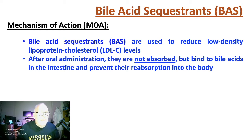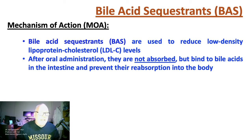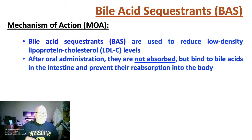With respect to the enterohepatic circulation of bile acids, an average man produces around 0.5 grams of bile acids per day by synthesis in the liver from cholesterol, and secretes around 0.5 grams a day. This daily turnover accounts for 5% of the total bile acid pool size. Adult humans produce around 400 to 800 milliliters of bile a day — just about a liter circulating through your GI system.